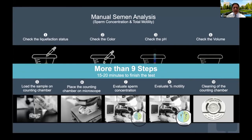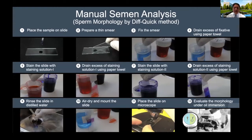Semen analysis also includes sperm morphology. Even by the fastest technique called Diff-Quik, there are still 12 steps involved in conducting a complete morphological evaluation. That can take about 30 to 60 minutes for preparing the smear, staining it, drying it, and then evaluating and scoring the slides.